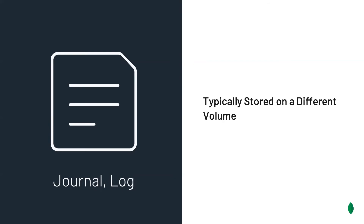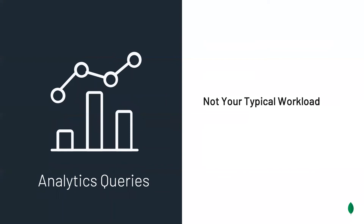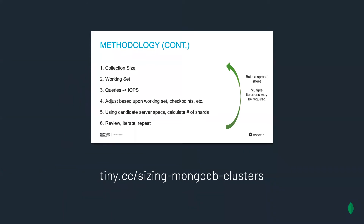Not all documents are created equal in size. For example, if we have a 64KB document and our block size is 8KB, then we will need 64 / 8 = 8 IOPS to perform a read or write on that document. Aggregation queries require different access patterns from the underlying storage layer, as they typically involve scanning collections, so we have to be wary of analytics queries run on the database. If you're interested in calculating the precise number of IOs for your collection, there's a great talk by Jay Rankel at MongoDB World 2017 called "Sizing MongoDB Clusters" — linked below.